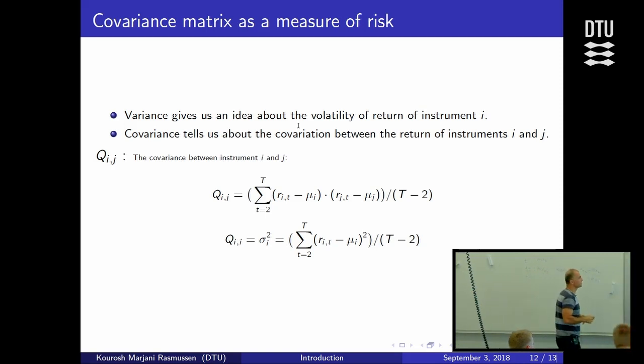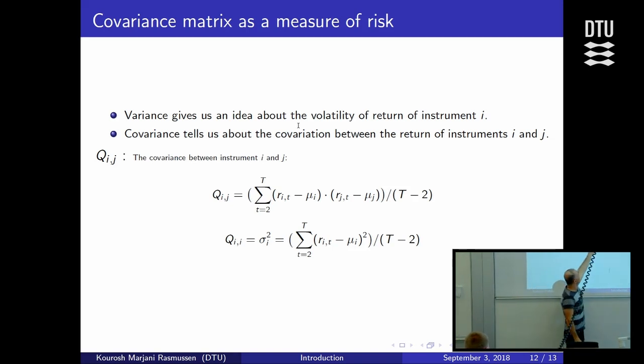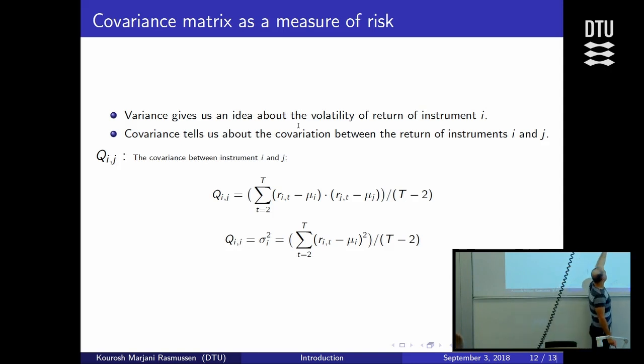So if you have, just to get an understanding of how this formula works, then let's say if you have asset one and asset two, mu i and mu j for being two different assets, then we are observing the returns from the second observation to the last one. Then let's say if at the same time you have a return for asset one which is greater than its average, and at the same time you have the return of asset two being greater than its average for all different time steps.